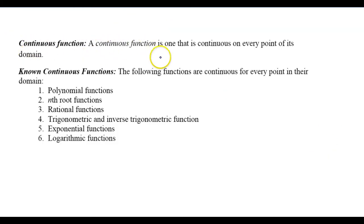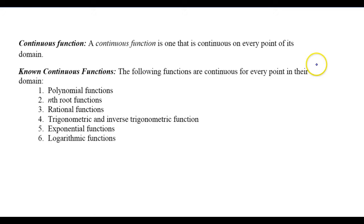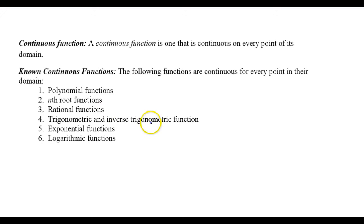In general, a continuous function is one that is continuous on every single point of its domain. It's not feasible to test every single point, so this list of known continuous functions is one you'll need to commit to memory. Polynomial functions are always continuous on their domains. Nth root functions, rational functions, trigonometric and inverse trigonometric functions, exponential functions, and logarithmic functions are all continuous on their respective domains. There's no need to check them — we can assume any of these function types are continuous without proof.